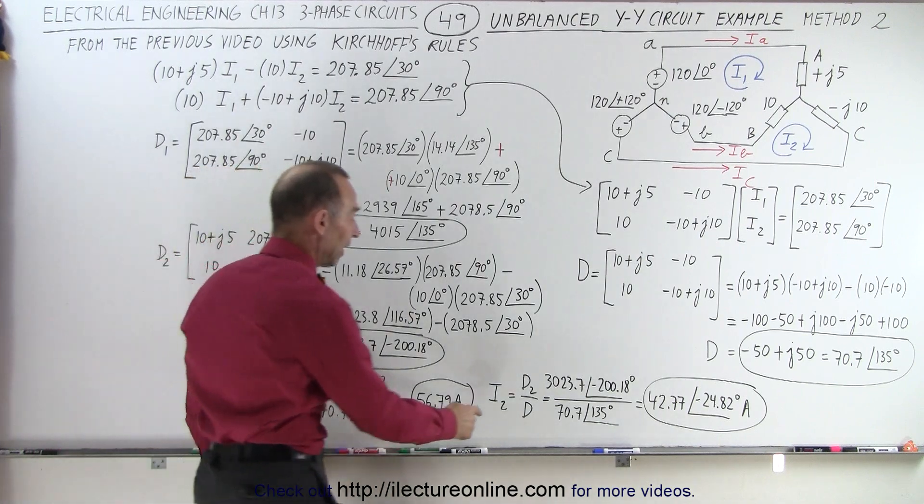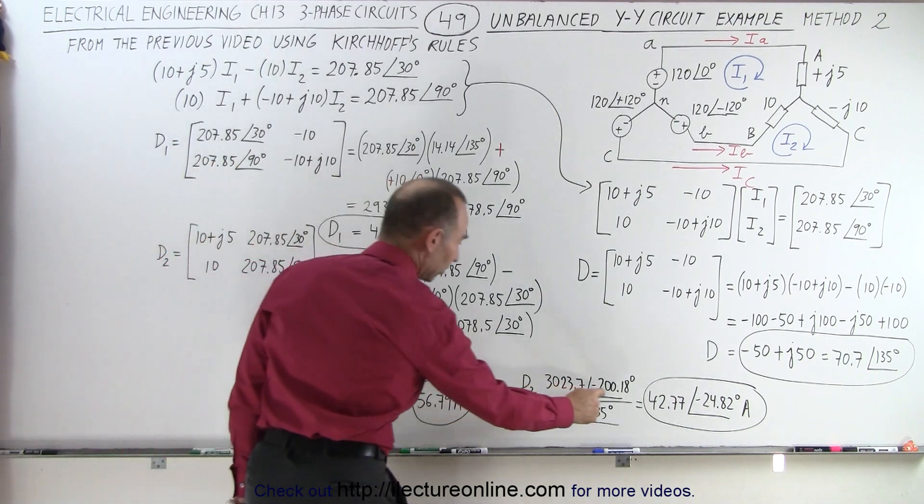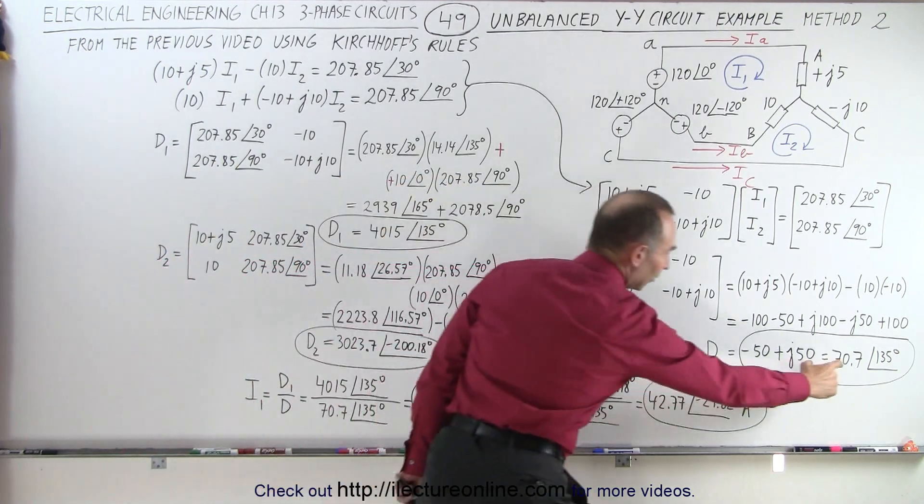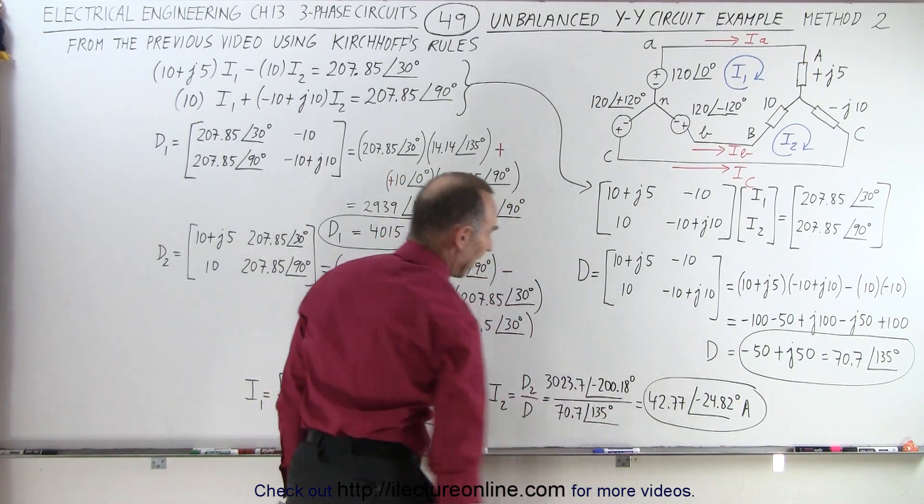If we do the same for I2, notice we take 3023 with a phase angle of minus 200.18 divided by 70.7 with a phase angle of 135, and we get the current I2.